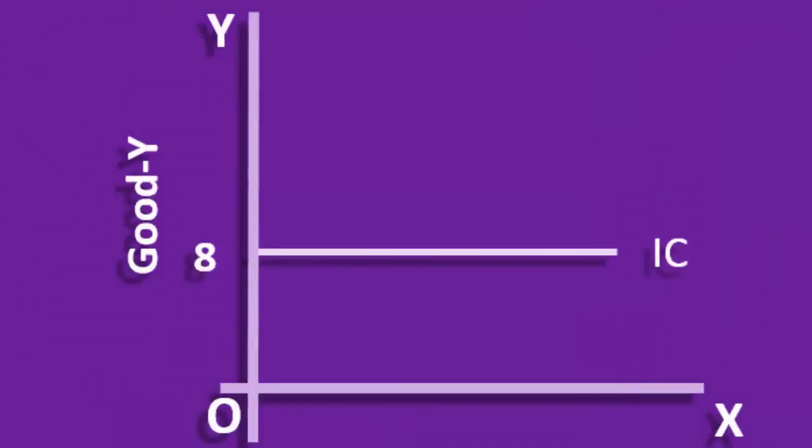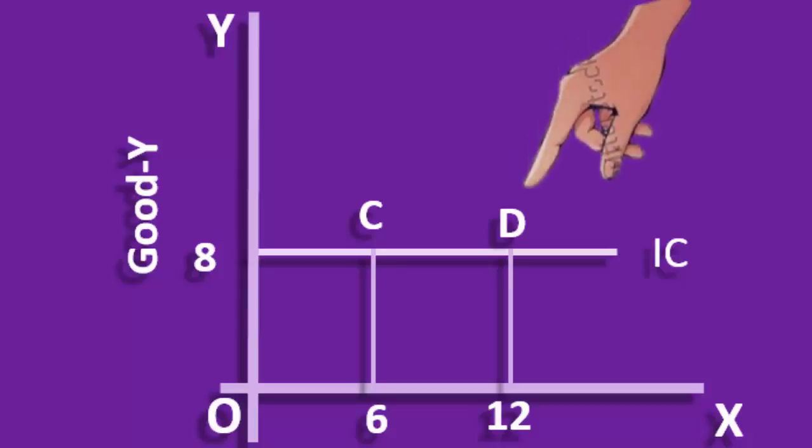Again, IC cannot be a horizontal curve. Here, quantity of good Y remains unchanged at 8 units. When the consumer moves from combination C to D, stock of good X alone increases from 6 units to 12 units. Since combination D consists more quantity of good X, consumer will prefer D over C because D gives him more utility than C. For this reason, Indifference Curve can never be horizontal.